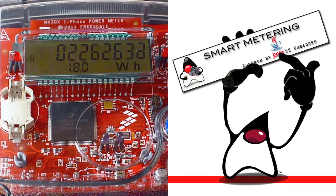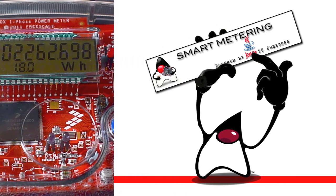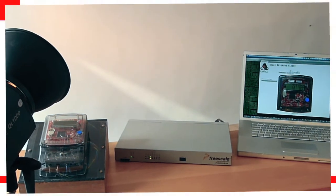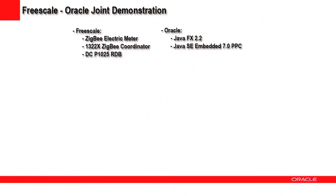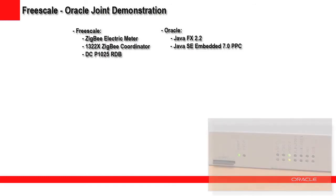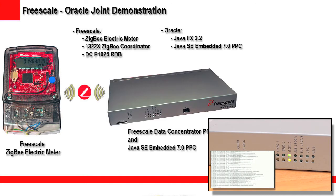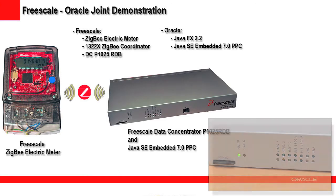The goal of this video is to demonstrate a Freescale and Oracle joint Java smart metering demonstration. It involves the following Freescale hardware: a Zigbee MK30 electric meter, a 1322X Zigbee coordinator, and a data concentrator P1025 reference design board.